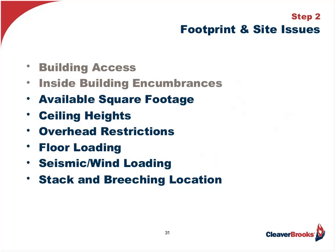Other footprint considerations include adequate space for walking around the boiler for maintenance such as casing and tube replacement or burner repair and adjustments. We need to look at ceiling height to accommodate boiler piping, valving, and an economizer. This also includes overhead restrictions such as ducting or pipe racks, and even Ethernet and communications wiring running to the boiler room. There's also the floor loading requirement — whether the floor is substantial enough to hold the weight of the new unit, where the pilings are, and what about seismic and wind loading. In this case we're using an existing stack, but a new freestanding stack would require wind loading analysis.